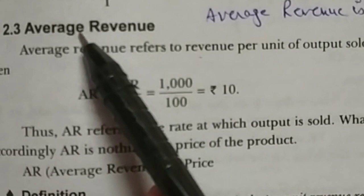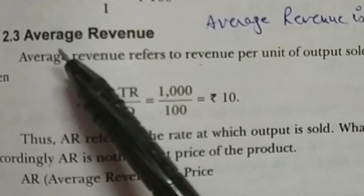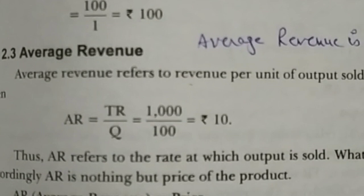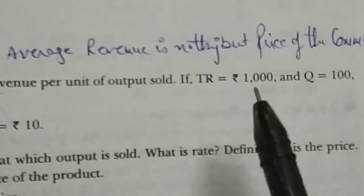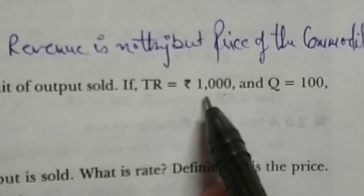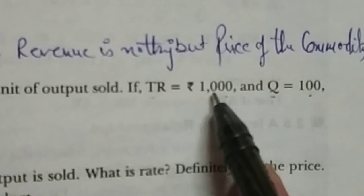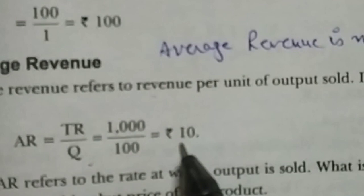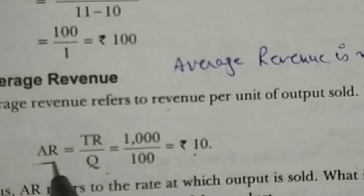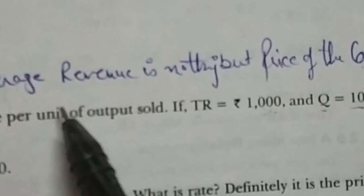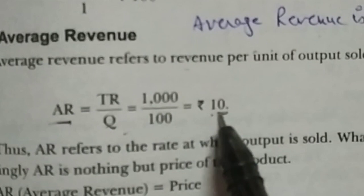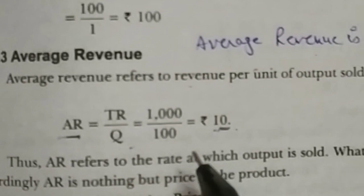Next I would like to explain the concept of average revenue. Average, as I have explained in previous lectures, means per unit. So now we will talk about revenue per unit, per commodity — how much receipt you obtained by selling one commodity. For example, if TR is 1,000 and quantity is 100, then 1,000 divided by 100 is equal to 10. So that means average revenue is nothing but the price of the commodity.